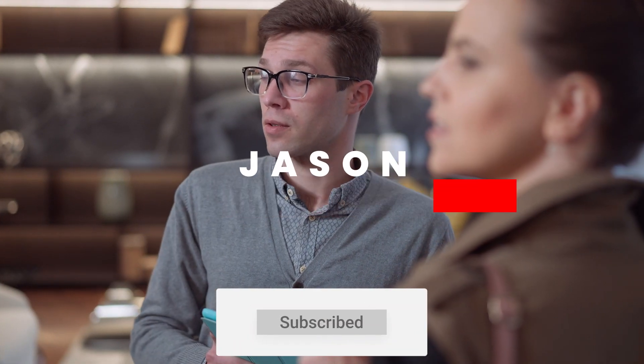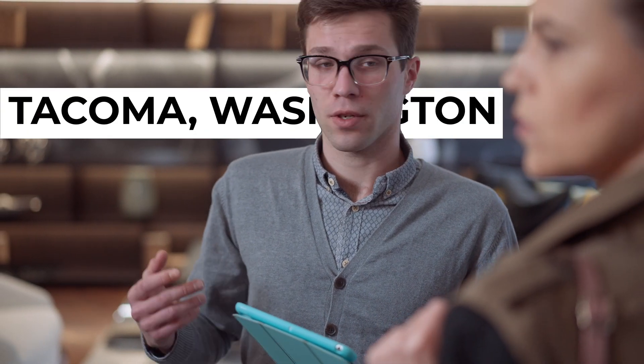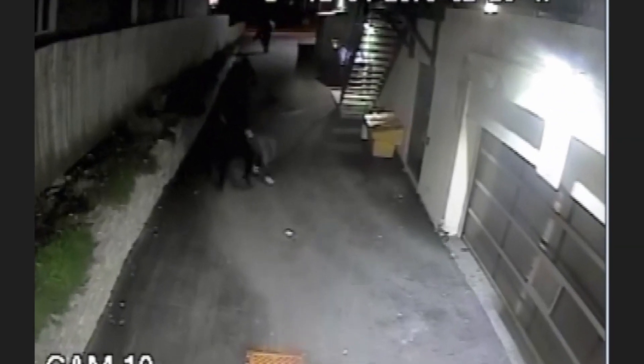Jason Padgett was a 32-year-old furniture salesman in Tacoma, Washington. On that fateful night, Jason Padgett was leaving a karaoke bar in Tacoma when he was attacked and robbed outside by two men.